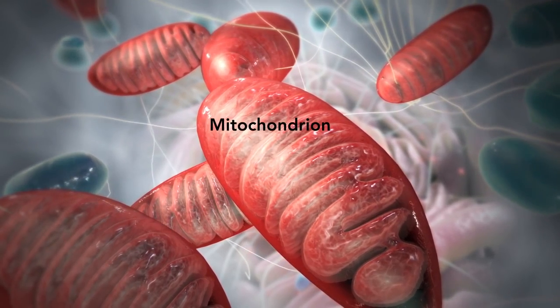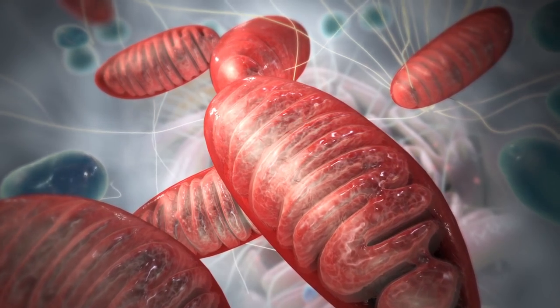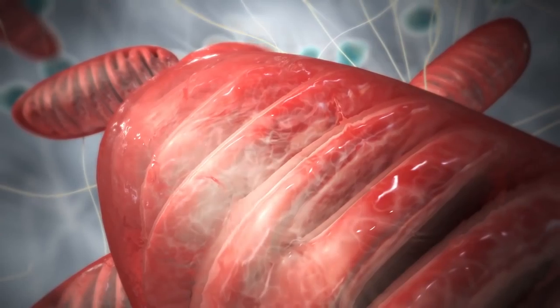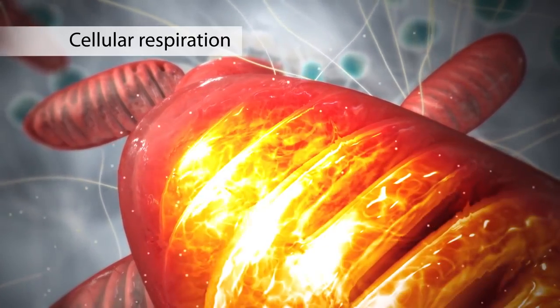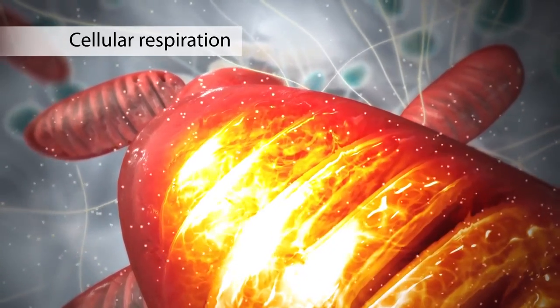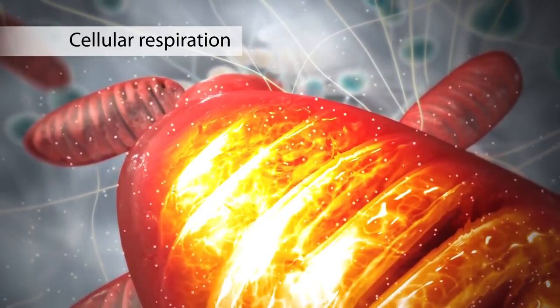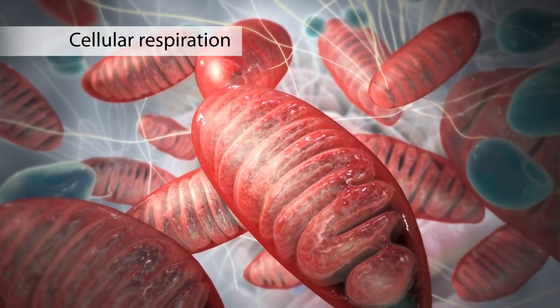The mitochondrion is an organelle that is the powerhouse for both animal and plant cells. During a process called cellular respiration, the mitochondria make ATP molecules that provide the energy for all of the cell's activities. Cells that need more energy have more mitochondria.